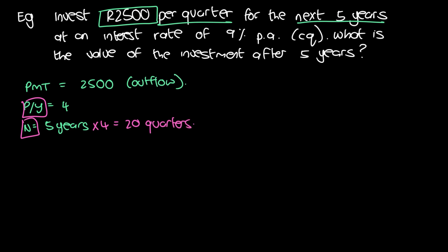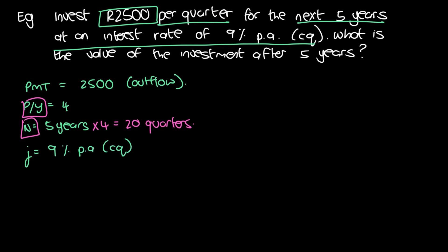The interest rate is nine percent per annum compounded quarterly, so I/Y is equal to nine — remember our financial calculator requires the nominal interest rate in percent. C/Y, the compounding frequency, is four. Because C/Y equals four and P/Y equals four, this is a simple annuity, since the payment periods and the compounding periods correspond — they're the same.